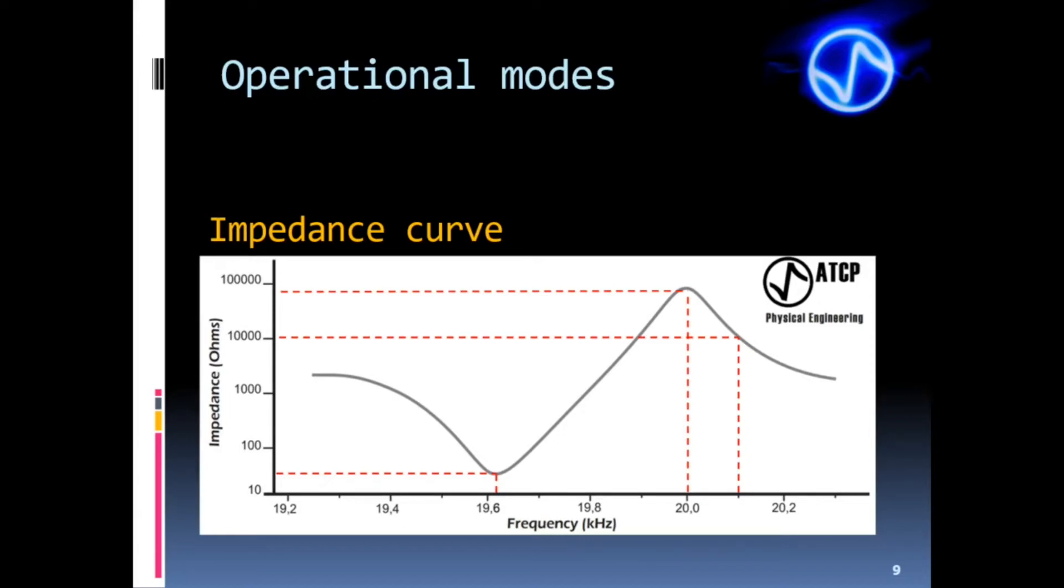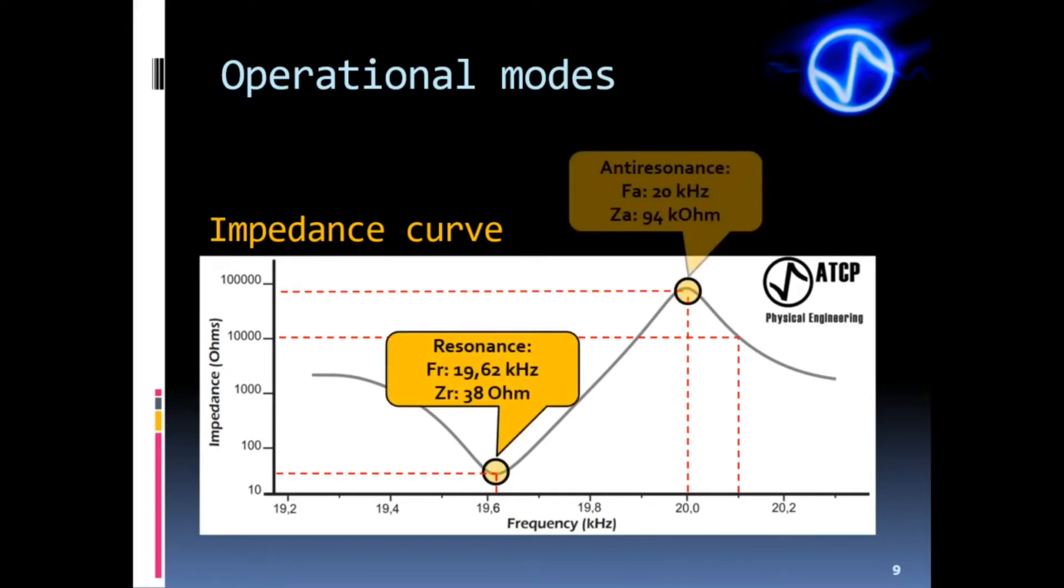At this moment we have already begun to understand the importance of tuning the resonance and anti-resonance frequency. There are two specific and important regions in this graph: the resonance and the anti-resonance.